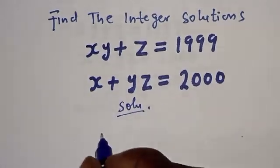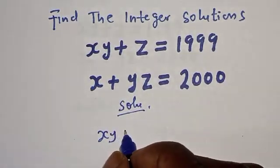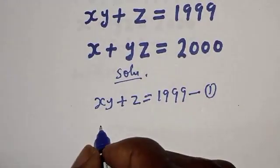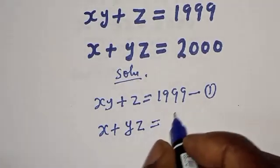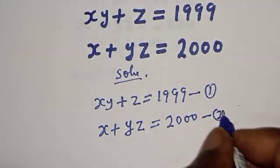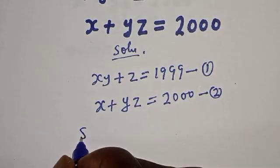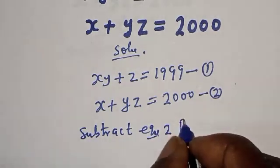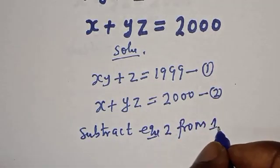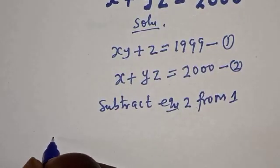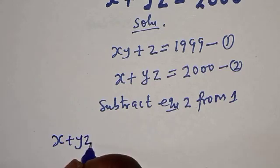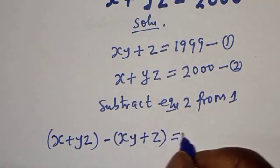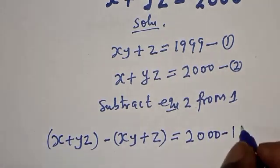Solution. xy plus z is equal to 1999 — let's call this equation 1. Then, x plus yz is equal to 2000 — let's call this equation 2. Now, let's subtract equation 2 from equation 1. We have x plus yz minus xy plus z is equal to 2000 minus 1999.